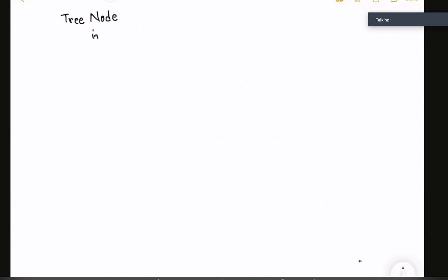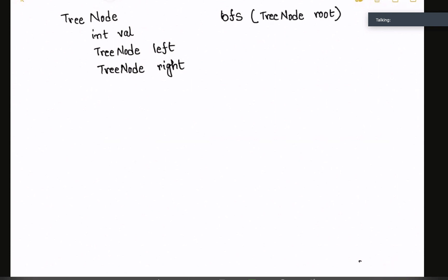Let's look at how to represent a tree node. The tree node has an integer value, a left child of type TreeNode called left, and a right child of type TreeNode called right. In our function, we are given the root node of the tree. First we check if the root is valid — if root equals null then we return. If root is not null, we proceed.